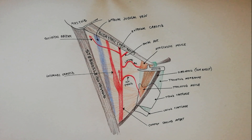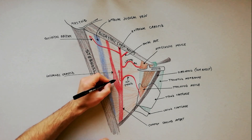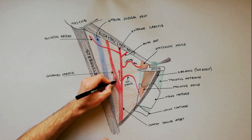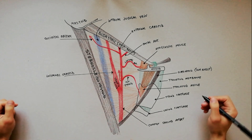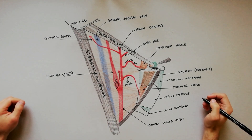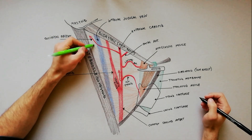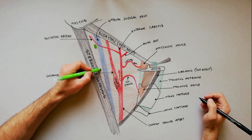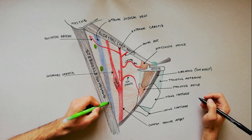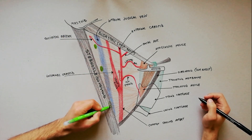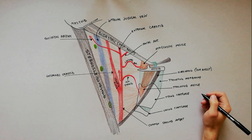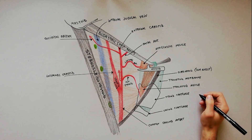The carotid sinus is a dilated area at the base of the internal carotid artery. The internal jugular vein descends posterolateral to the common and internal carotid arteries, and is accompanied by deep cervical lymph nodes.